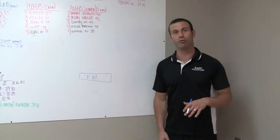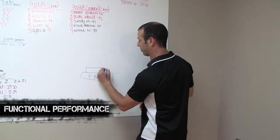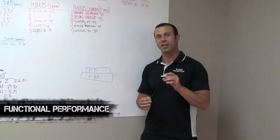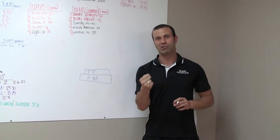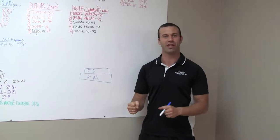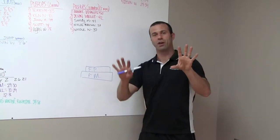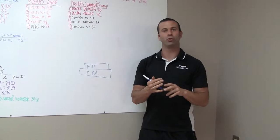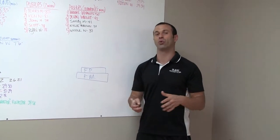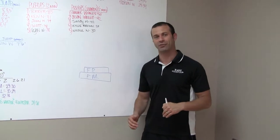The next block in our performance pyramid building on the foundation of functional movement is functional performance — does the athlete have sufficient power to be effective at their particular sport? Power is simply strength plus speed together. Football players always get excited because they think it only applies to them, but it applies to everyone. Anytime you run, jump, cut, dive, swing, punch, or kick, it's power that makes you good at it. The faster you apply more force into the ground, the faster you go.